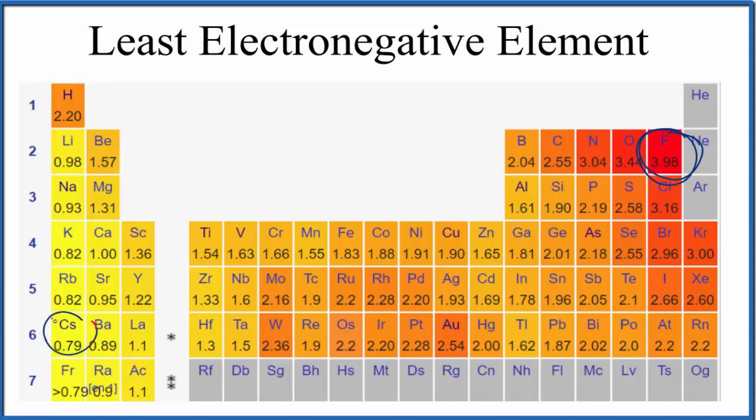And down here, cesium and francium, these are the least electronegative elements on the periodic table. So in answer to our question, the least electronegative element on the periodic table, that's going to be either cesium or francium.